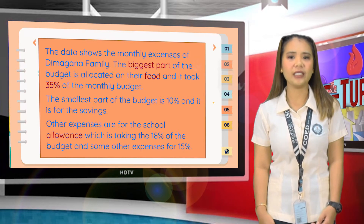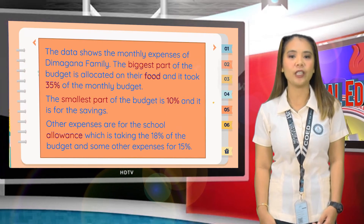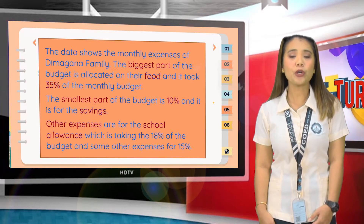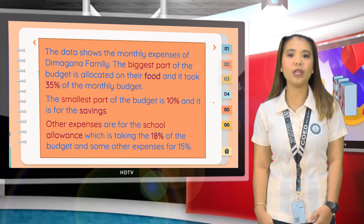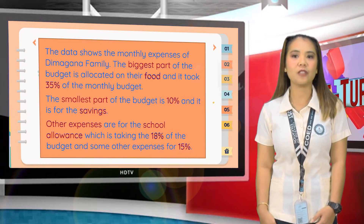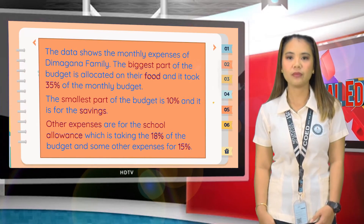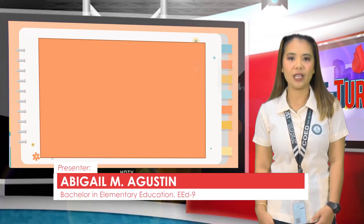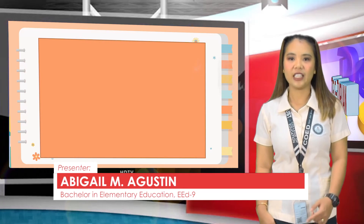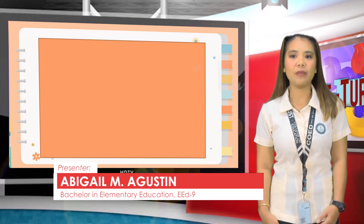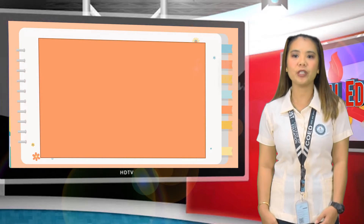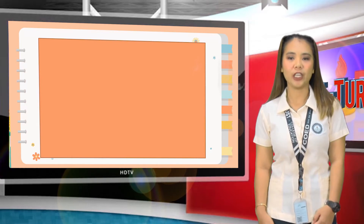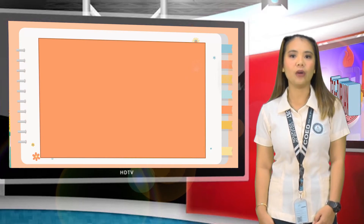The smallest part of the budget is 10% and it is for the savings. Other expenses are for the school allowance, which consumed 18% of the budget, and some other expenses for 15%. The total percentage of Dimagana's monthly budget is 100%. This is how to analyze a pie chart using a set of data in a word problem.